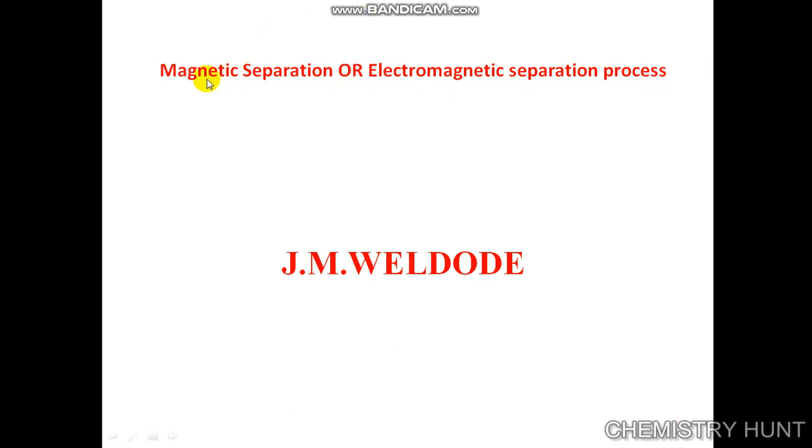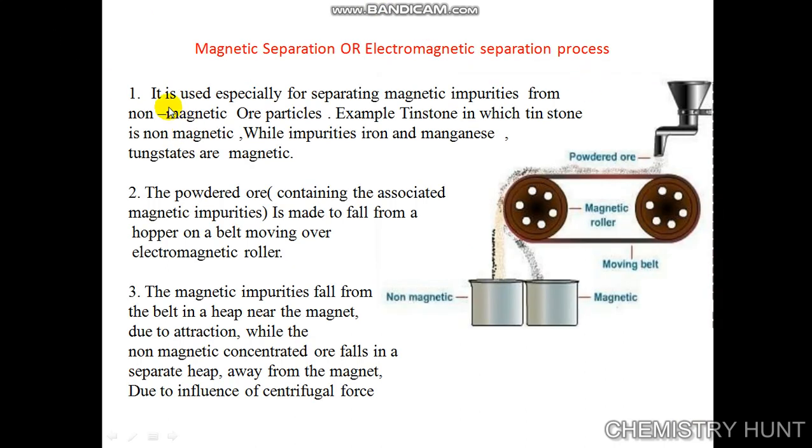Good morning. Today we are going to see the magnetic separation, or electromagnetic separation process. This method is specially used for separating magnetic impurities from non-magnetic ore particles. Here we take an example of tin stone, in which tin stone is non-magnetic while the impurities like iron and manganese are magnetic in nature.